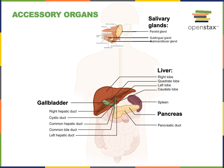The pancreas also produces a large amount of digestive enzymes that are important for chemical digestion, and also produces bicarbonate that functions to neutralize the acidity of chyme coming from the stomach. Pancreatic juice is secreted into the duodenum, where it mixes with chyme coming from the stomach, neutralizing the acidity and enabling chemical digestion.